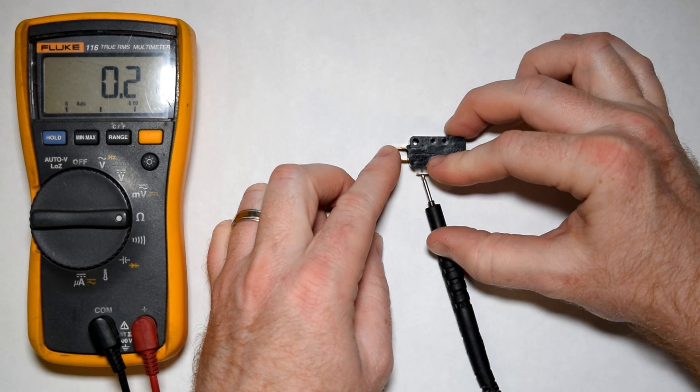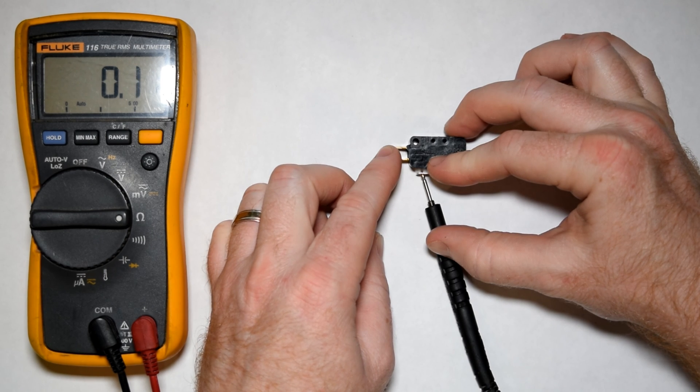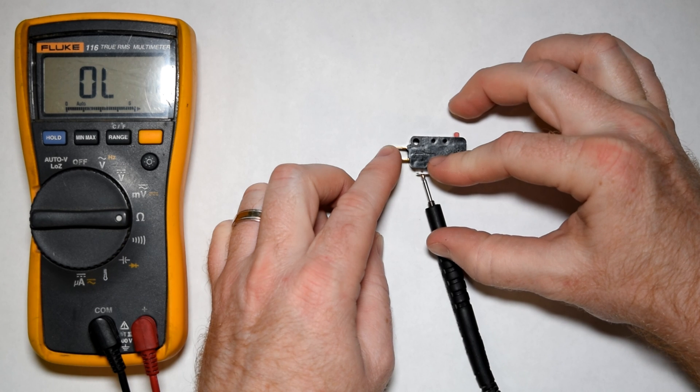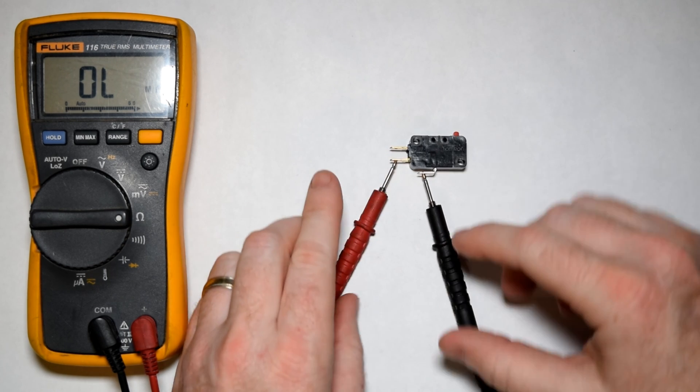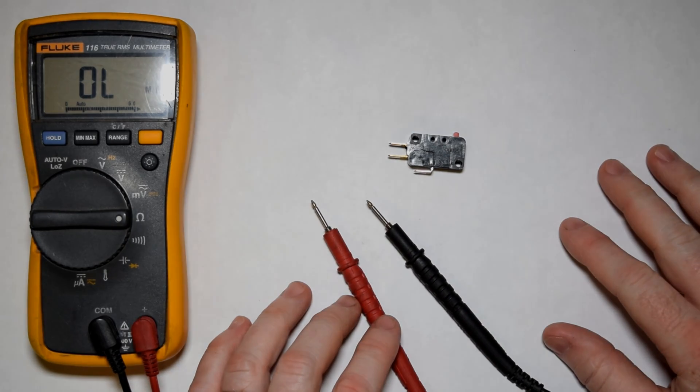For that reason, I tend to prefer the ohms of resistance test. You can still see if it has continuity or not with either test. But this one will give you what the resistance is. So I hope that helps you some for continuity testing with your appliance repair. Thanks for watching.